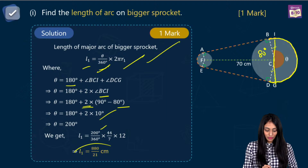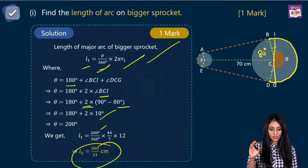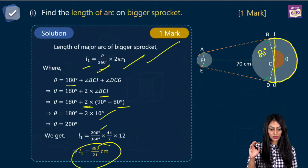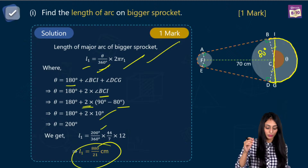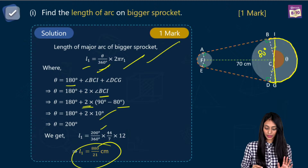We get 880 by 21 centimeters. That is L1, the length of the major arc of the bigger sprocket. Better to convert it to decimals since we'll need it later.